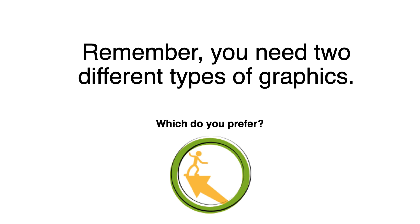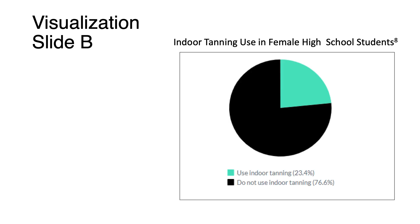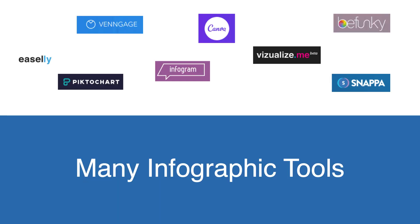Look and see which visualization you prefer — A or slide B. For me, slide A was difficult to interpret. To understand the percent, you had to count each of the triangles. The pie chart was easier to interpret.